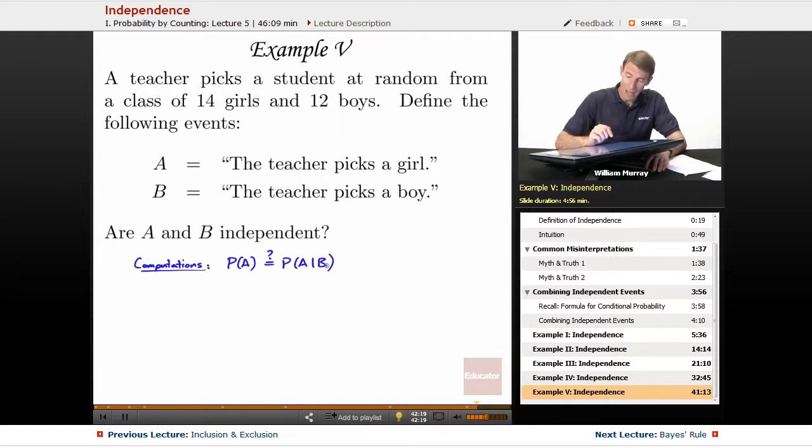So our probability of A is the probability of picking a girl, where there's 14 girls total, and there's 26 students total. I'm getting that by adding 14 plus 12. So 26, 14 out of 26 is the probability that we pick a girl.